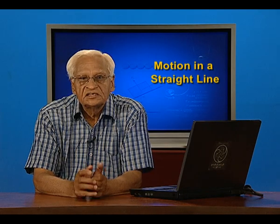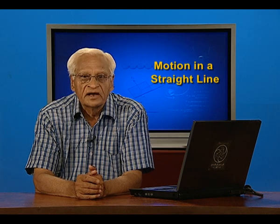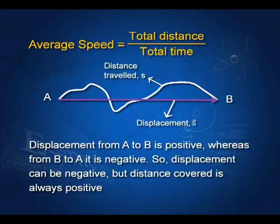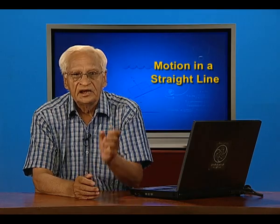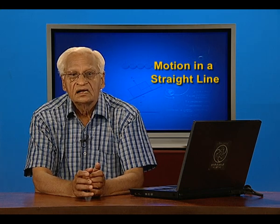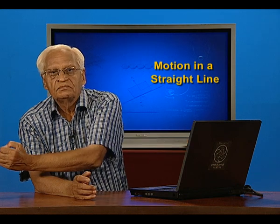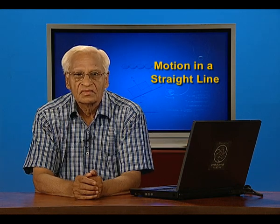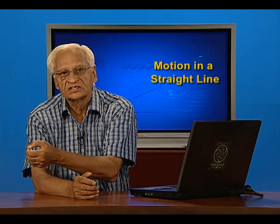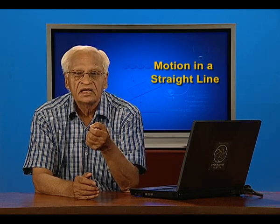Average speed is defined as the total distance covered divided by the total time taken. The distance covered would depend upon the path taken. We go from A to B and take a very meandering path — the length along this path is the distance travelled, whereas the direct arrow from A to B shows the displacement. Displacement from A to B is positive, and from B to A it can be negative, whereas distance covered is always positive.